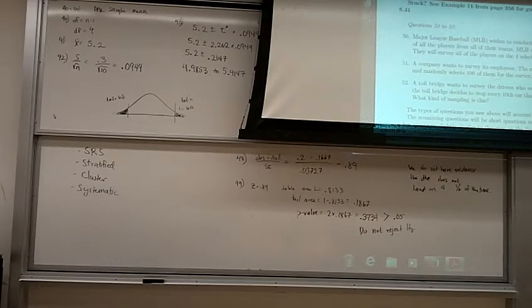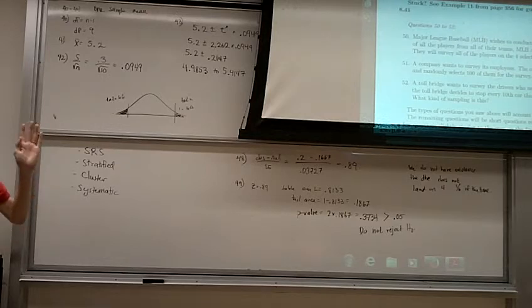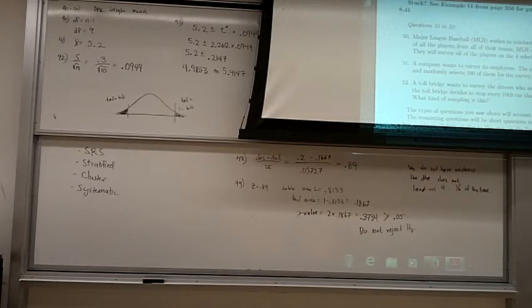Okay, number 51, it says a company wants to survey its employees. A company takes a master list of everyone in the company and randomly selects 100 of them for the survey. What kind of sampling is this? Simple random. I want simple random. And a key clue there is that it says master list of everyone. So if you have a roster of everyone, or just a list of everyone, then you can do simple random sampling.